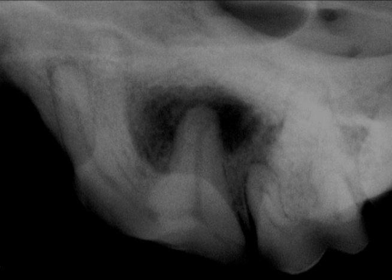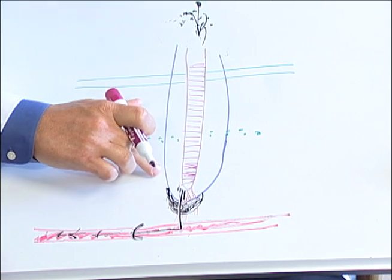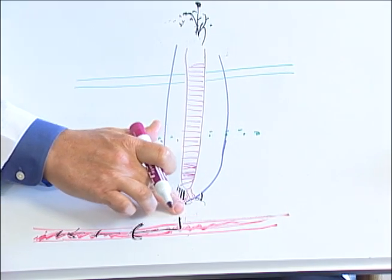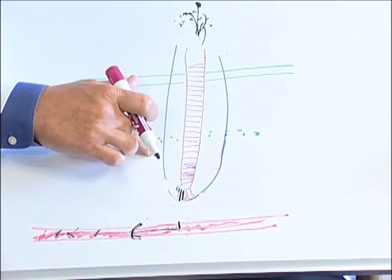Here is a pre-operative radiograph of an abscessed maxillary 4th premolar in a dog. Here is the post-operative root canal radiograph showing excellent filling. If the root canal is properly performed, the bacterial supply line is cut, and the remaining infection can be effectively cleared by the body.